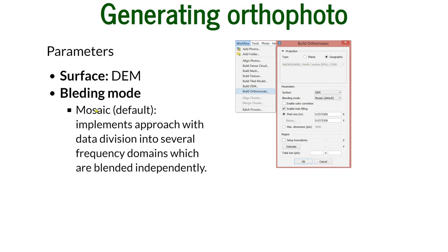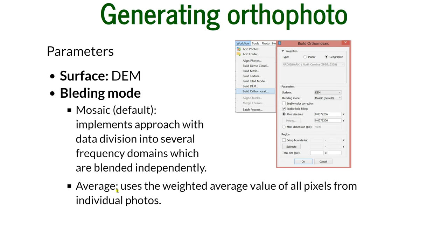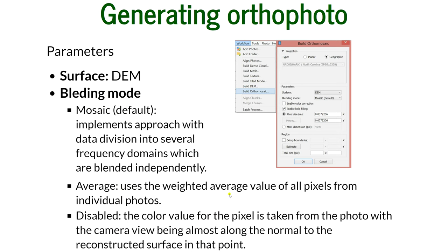Now you have blending modes. There's mosaic blending mode that implements approach with data division into several frequency domains that are blended independently. I usually use the mosaic because it renders the best results. The average one uses the weighted average value of all pixels from individual photos. Then disabled assigns the color value for the pixel taken from one single photo that is almost along the normal to the reconstructed surface at that point. The effect of that is you have sharp edges—it's not mosaic, it's not blended uniformly.